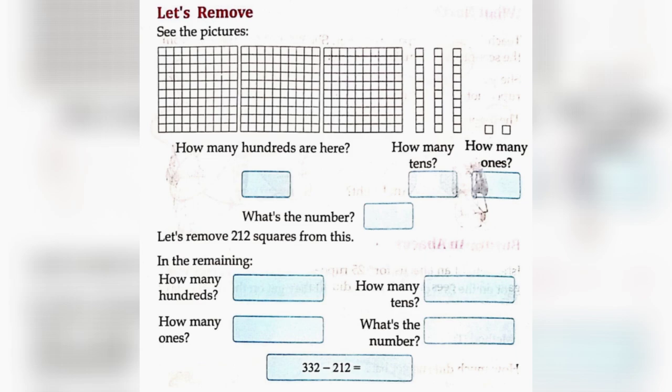Let's remove. See the pictures. How many hundreds are here? 3. How many tens? 3. How many ones? 2. What's the number? 332. Let's remove 212 squares from this. In the remaining, how many hundreds? 1. How many tens? 2. How many ones? 0. What's the number? 120. So, 332 minus 212 is equal to 120.